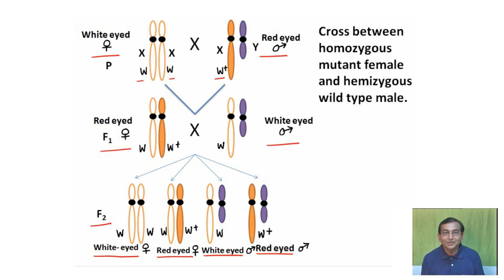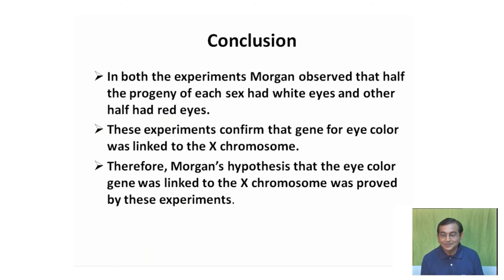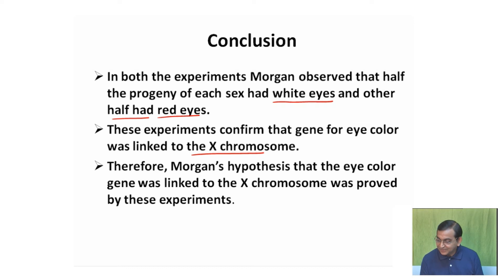As expected, half of each sex were white-eyed and half were red-eyed. From both crosses, Morgan observed that half the progeny of each sex were white-eyed and the other half had red eyes. This confirmed that the gene for eye color was linked to the X chromosome. Morgan hypothesized that the eye color gene was on the X chromosome, which was proved by these experiments. He concluded that the eye color gene is located on the X chromosome and is carried from one generation to the next through chromosomes during meiosis.